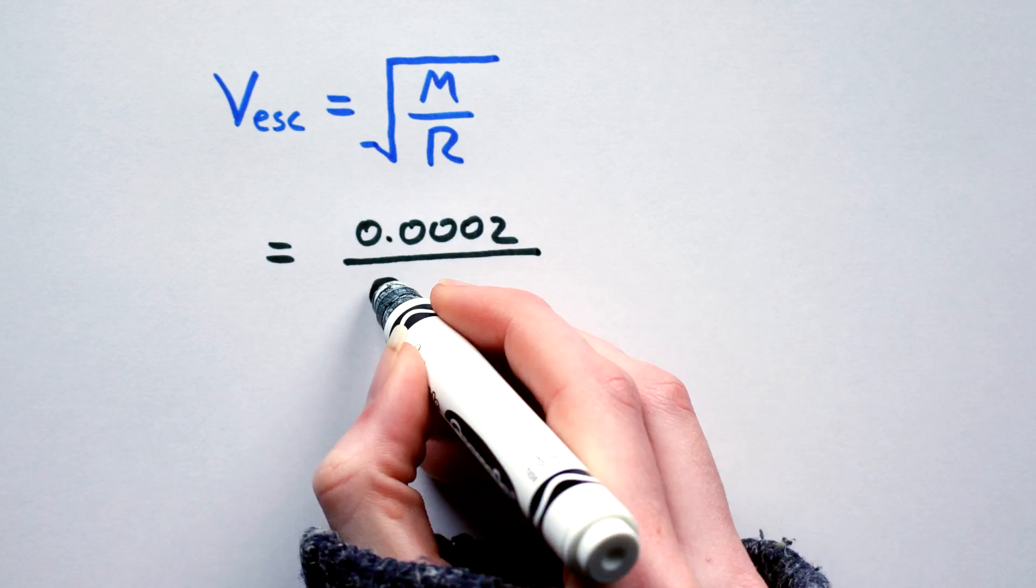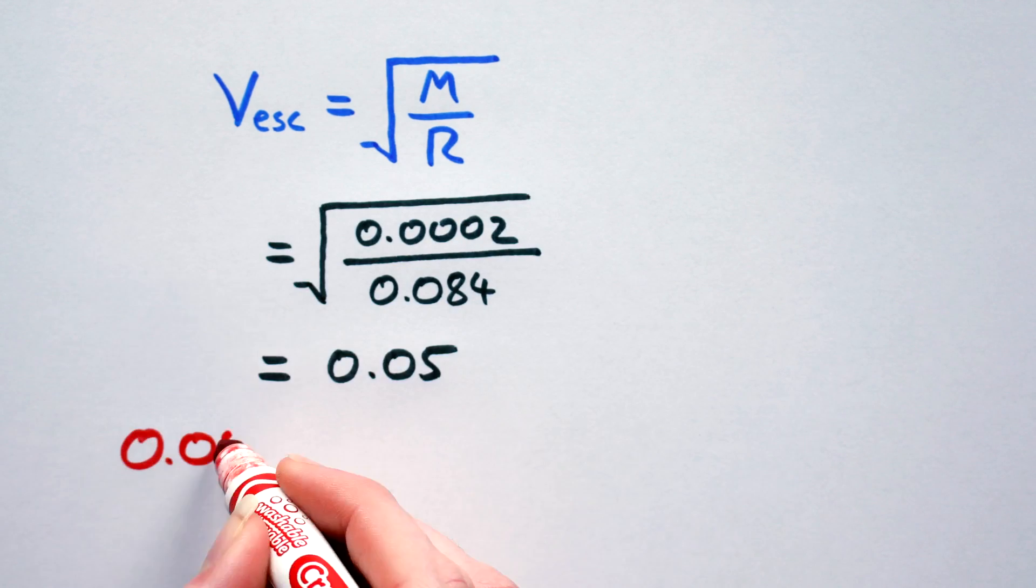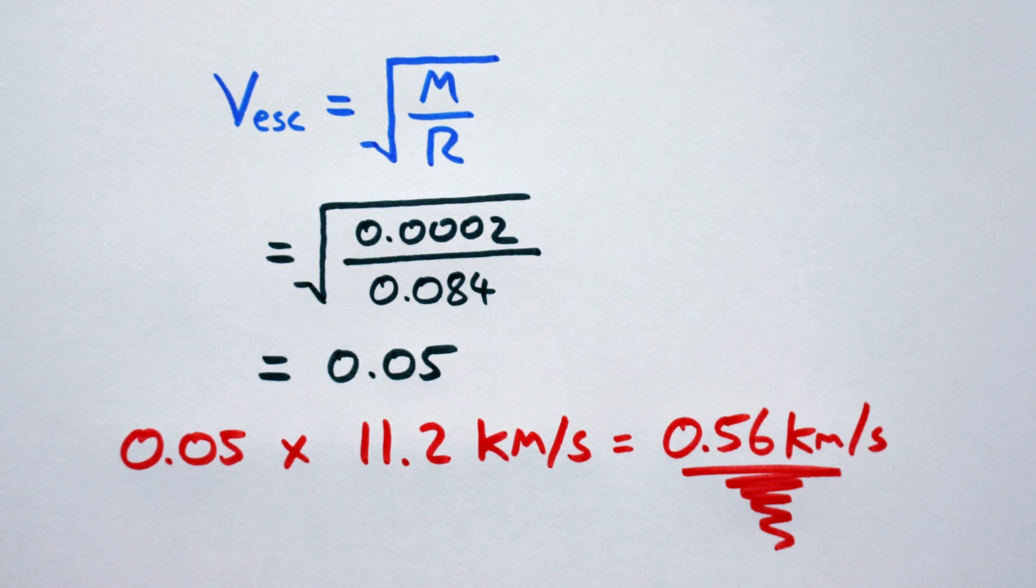So more number crunching, and we get a value of 0.05, which we can then multiply by the absolute value of the escape velocity at Earth, and boom! Turns out, to escape Peter's gravitational pull, we need to be traveling at 0.56 kilometers per second.